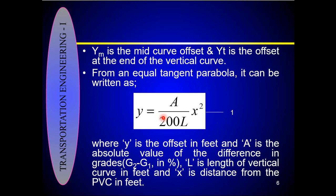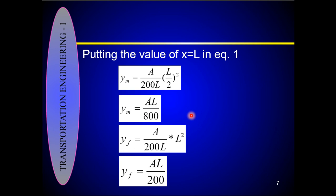You can determine the offset at any point by using Equation 1: Y = (A / 200L) × X², where Y is the offset in feet, A is the absolute value of the difference in grades (G1 minus G2) in percentage, L is the length of the vertical curve in feet, and X is the distance from the PVC in feet. You can determine the mid-curve offset by putting X = L/2 into Equation 1, giving YM = AL / 800. Similarly, the offset at the end of the vertical curve is found by putting X = L, giving YF = AL / 200.